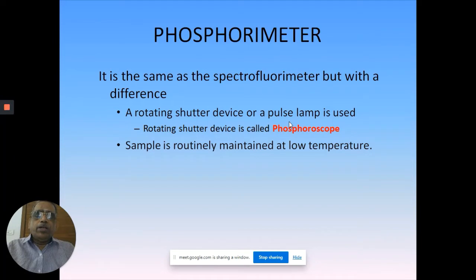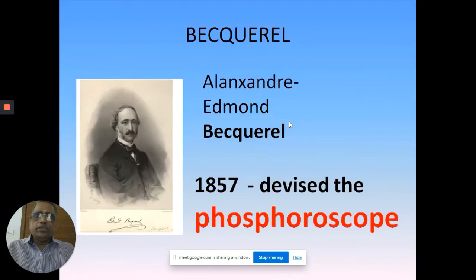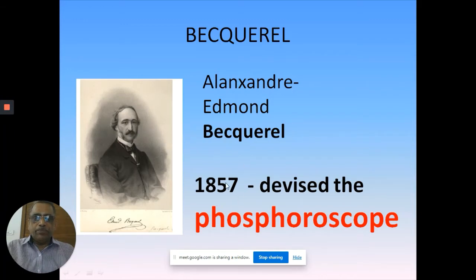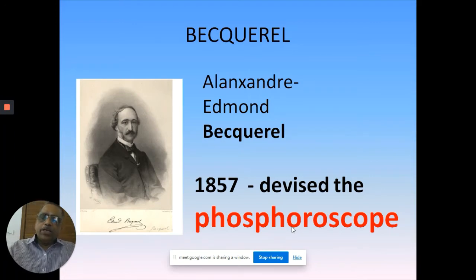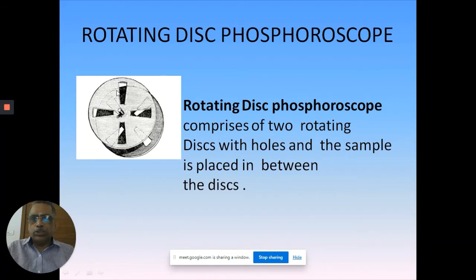Becquerel was the first person who gave an idea of phosphorescence - he devised the phosphoroscope. He was the first to devise a methodology to measure phosphorescence, in the year 1857. His name is Alexander Edmund Becquerel. The device he made is called a phosphoroscope. He initially designed a rotating disc type phosphoroscope. You will see two discs with slots - four slots, two slots, or one slot depending upon requirements.